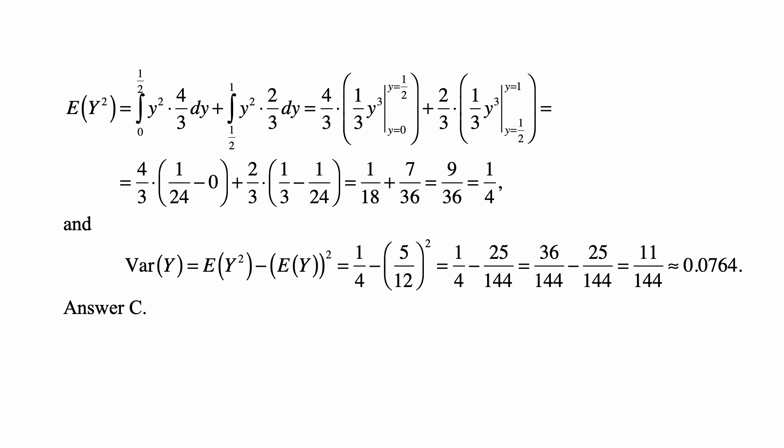So that's 4/3 times 1/3 y cubed evaluated from 0 to 1/2 plus 2/3 times 1/3 y cubed evaluated from y equal to 1/2 to 1. So that's 4/3 times 1/24 minus 0 plus 2/3 times 1/3 minus 1/24.